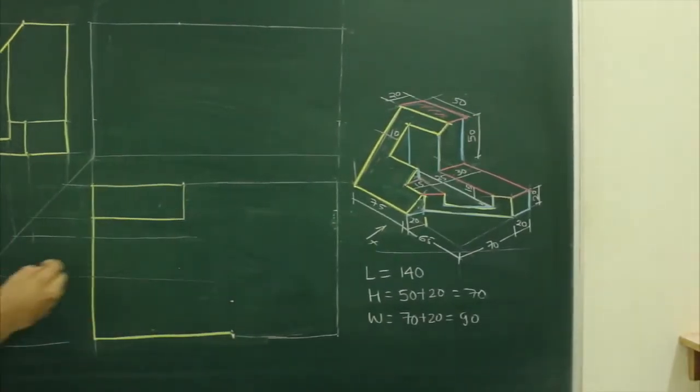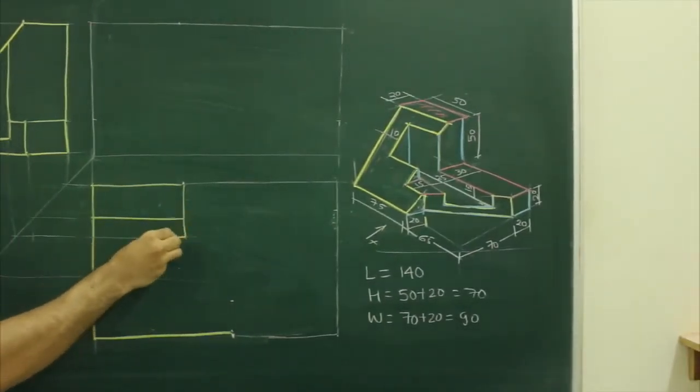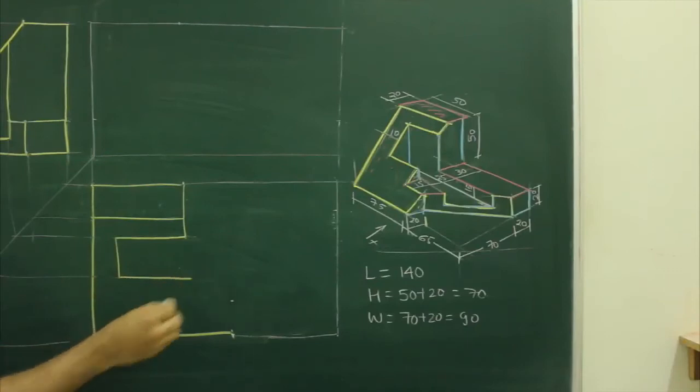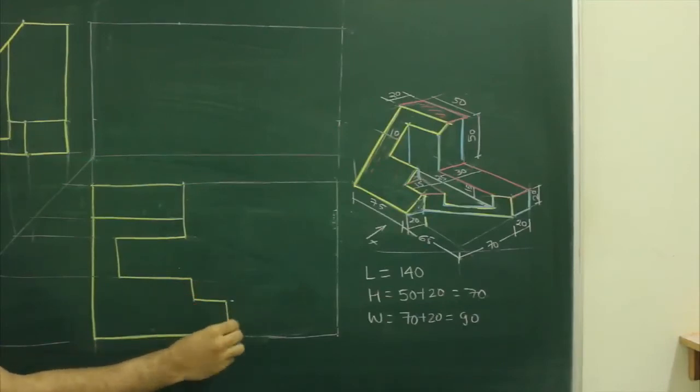And we will extend from here, we will go inside and leave 10, because it is given. Then after this, we will go down by 15, again we will come out and we will join this.